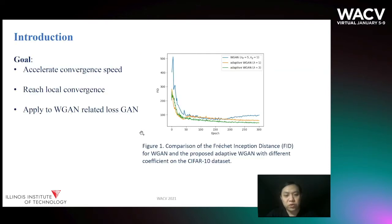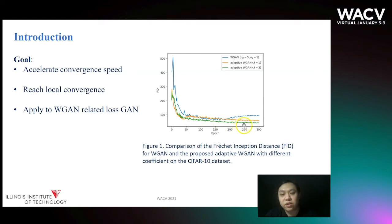Our work is to accelerate the convergence speed and improve the performance of WGAN-related loss GAN. Here we give an example comparing the Fréchet Inception Distance (FID) for WGAN and the proposed adaptive WGAN on the CIFAR dataset. As we can see, the green curve, which is the adaptive WGAN, descends faster and reaches a lower FID compared with the blue curve, which represents the original WGAN.